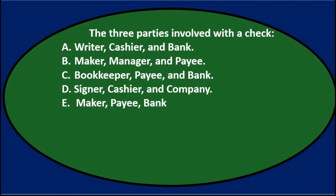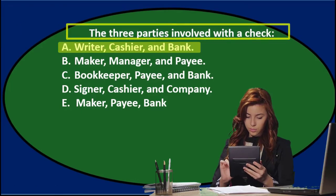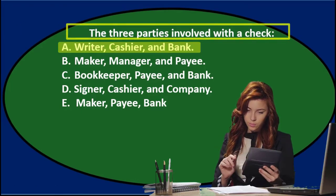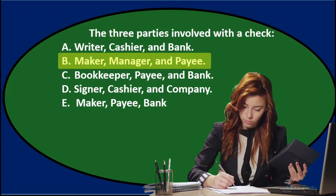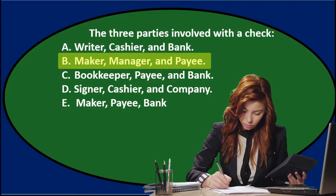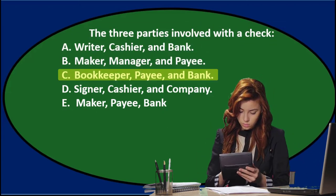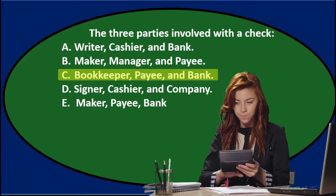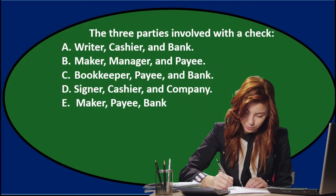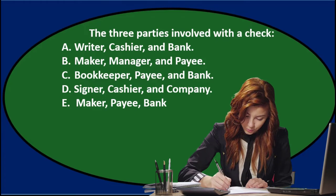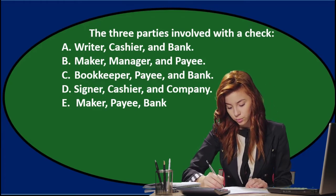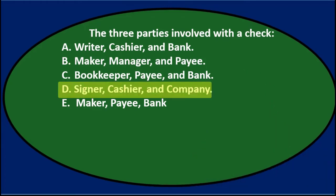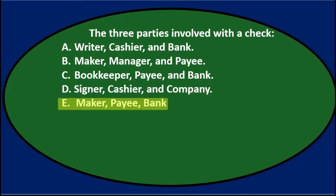Next question: The three parties involved with a check. A, writer, cashier, and the bank. B, maker, manager, and payee. C, bookkeeper, payee, and bank. D, signer, cashier, and company. Or E, maker, payee, and the bank.